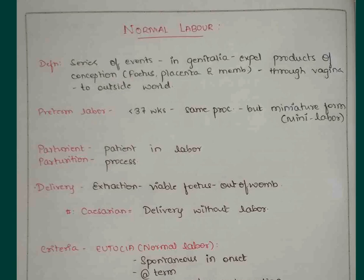The normal term of this labor will be 38 weeks. If it is less than 37 weeks it will be called preterm labor. Remember that 38 to 42 weeks of gestational age, if delivery occurs or if the labor occurs, then it is called term pregnancy. If it is greater than 42 it is called post-term pregnancy. If it is less than 37 it is called preterm labor.